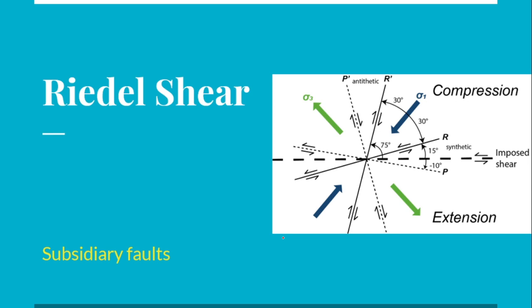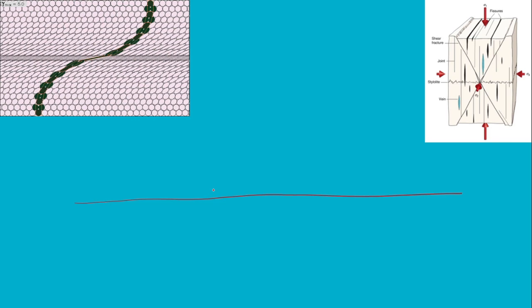We will first try to understand how these Riedel shears form based on the concept of shearing, in which we all are aware that a sphere, a simple sphere, on application of simple shear converts into an ellipsoid. We will try to apply that concept to the rock and we'll see how these fractures might develop.